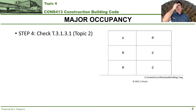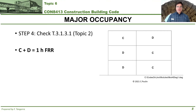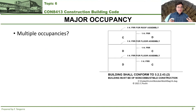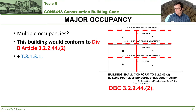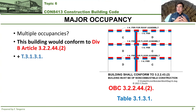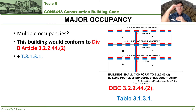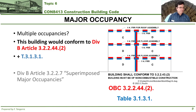The last thing to do is remember what we learned in topic two: we also have to check the requirements from Table 3.1.3.1 under Division B. For C and D occupancy, that table gives a fire resistance rating of one hour. Bringing it all together for multiple occupancies: Division B Article 3.2.2.44.2 requires one hour for the construction of the structure, and Table 3.1.3.1 also requires one hour. Both requirements align at one hour, so the structure requires a fire resistance rating of one hour. If the two requirements were different, you'd pick the larger one.